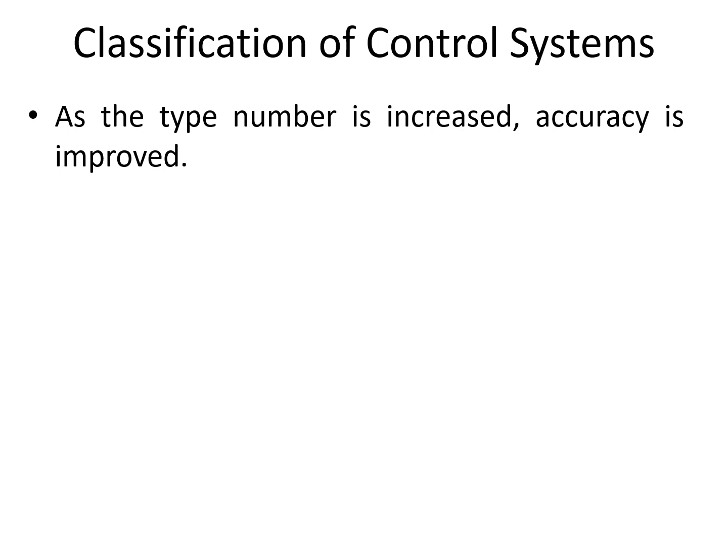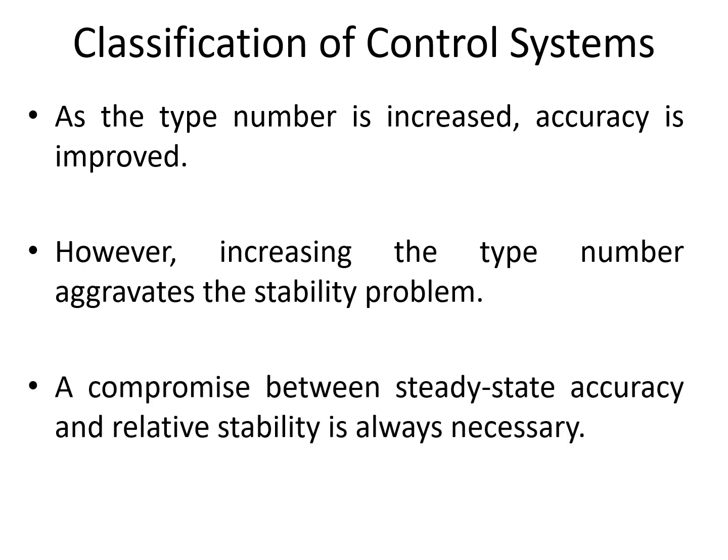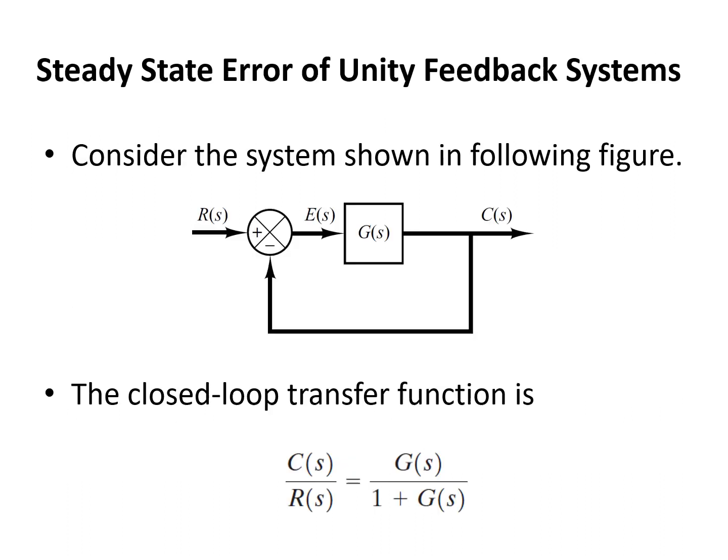As the type number is increased, the accuracy also improves. However, increasing the type number aggravates or disturbs the stability of the system. We need to have a compromise between steady state accuracy and relative stability of the system. We cannot just keep increasing the n value for more accuracy, nor decrease the type to increase stability. We should have a compromising relationship between type and stability of the system.